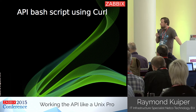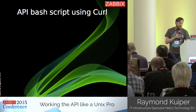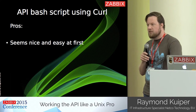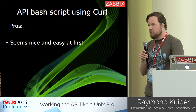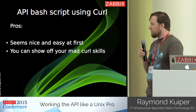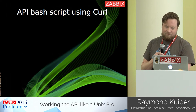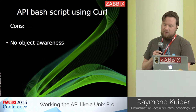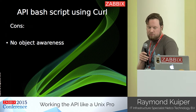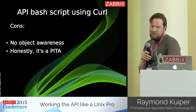One option is to build API scripts in bash using curl. The pros: it seems pretty nice and easy at first — you start with a little script, some curl, and it works. It also takes some mad curl skills, so you can show those off to your colleagues. The cons: it has no object awareness, so you're basically just grabbing and setting things, and at some point things will probably break because something wasn't escaped properly. It's just a pain to be honest.